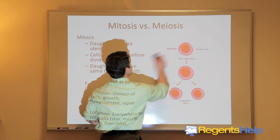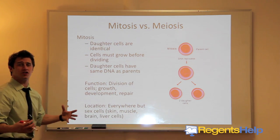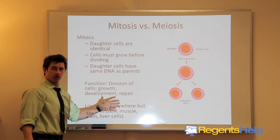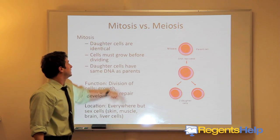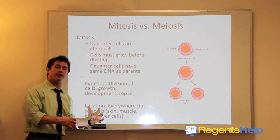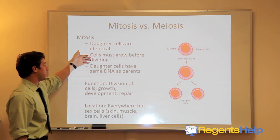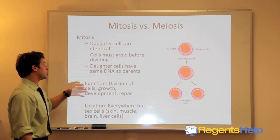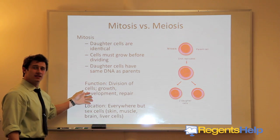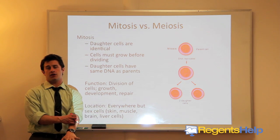Mitosis is essentially cloning because the daughter cells are identical to the parent cell. The cells must grow before they divide — if you divide before growing, the cells would be too small. The daughter cells have the same DNA as the parent. Functions of mitosis include cell division, growth, development, and repair.